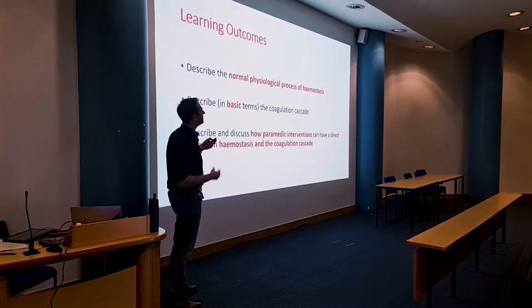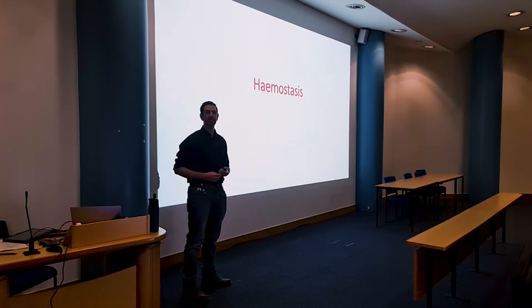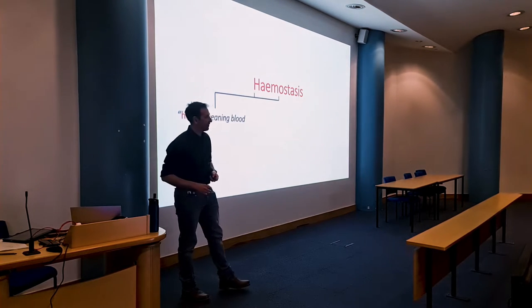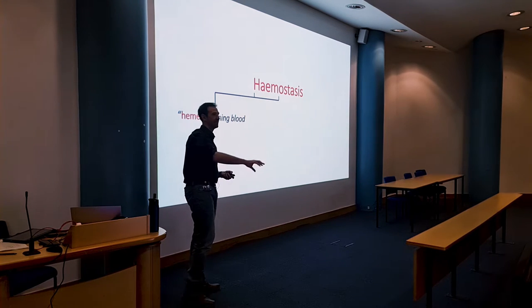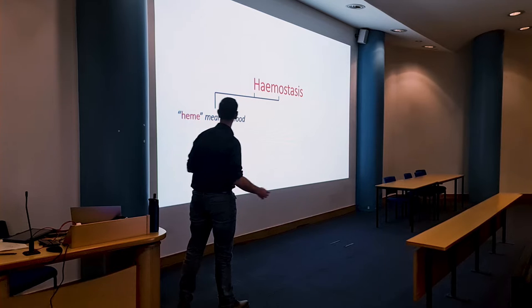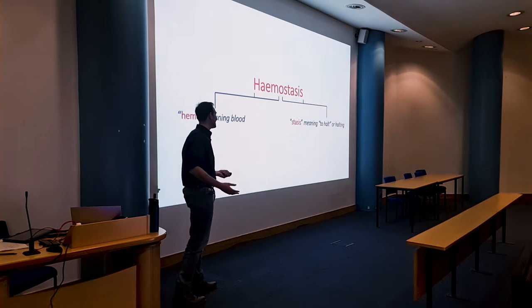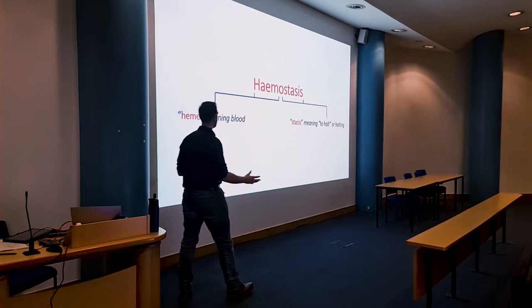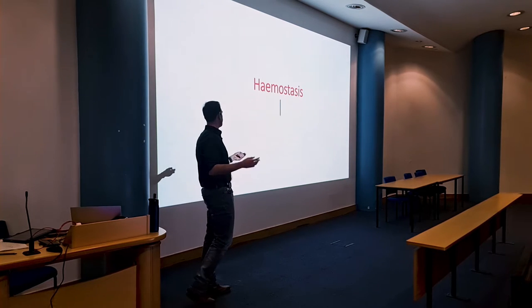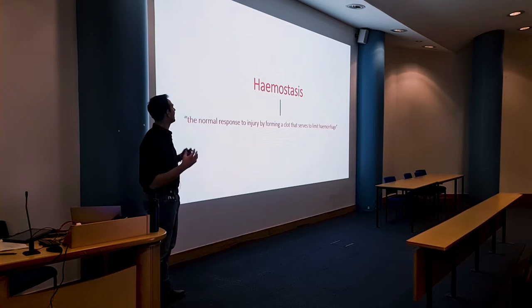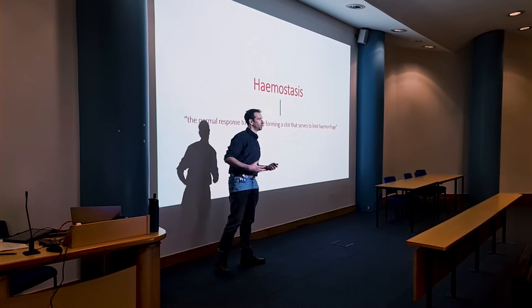We've been using the term hemostasis a lot. What is that? The explanation is usually in the word itself. 'Hemo' comes from ancient Greek meaning blood, and 'stasis' means to halt, to stop. So it literally means to stop blood. The official definition of hemostasis is the normal response to injury by forming a clot that serves to limit hemorrhage — and this is what happens naturally, physiologically, to our body.